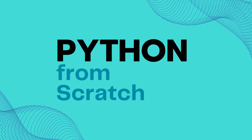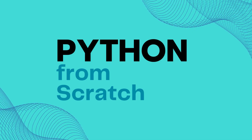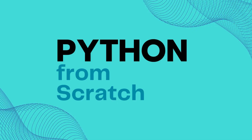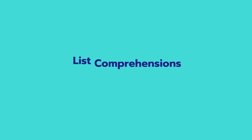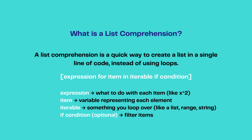Hello everyone, welcome to our Python from scratch series. In the last video we covered modules and libraries in Python. In this video we will talk about list comprehension. List comprehension is a quick way to create a list in a single line of code instead of using a loop. The expression we follow for list comprehension includes a first expression, which can be a logical statement.